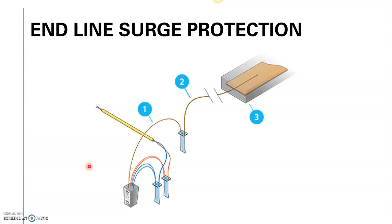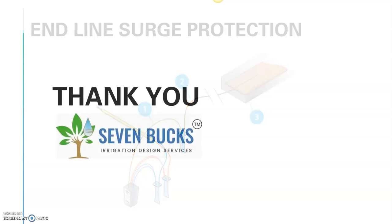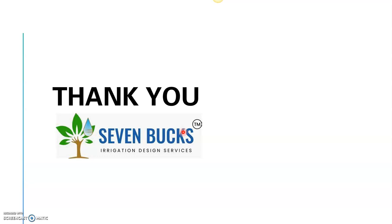We also install the same surge suppressor at the end of every two-wire path. This is how we protect instruments in lightning-prone areas. I hope you've learned something about lightning protection today. If you have any questions, please ask. Thank you for joining — this is Soundbugs Irrigation Design Services. Thank you, bye.